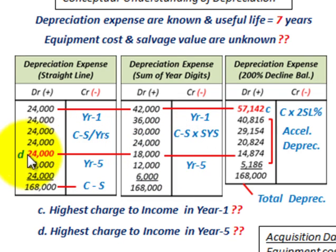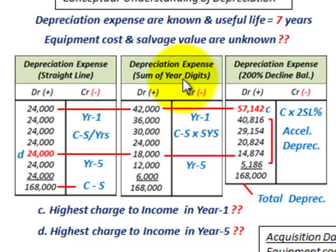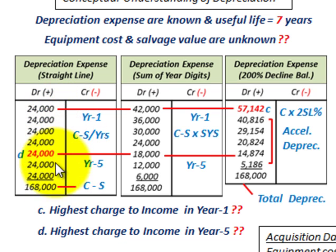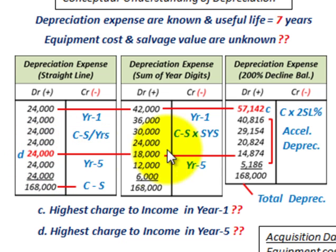For year five, comparing the methods: straight line is $24,000, sum of years digits is $18,000, and declining balance is $14,000. The key point is that with accelerated depreciation methods — declining balance and sum of years digits — we have higher depreciation early in the asset's life, and lower depreciation charges as we move through the schedule, compared to straight line where it's a constant charge. You calculate depreciation expense for each year under each method and then compare.